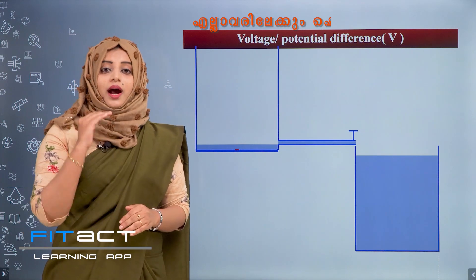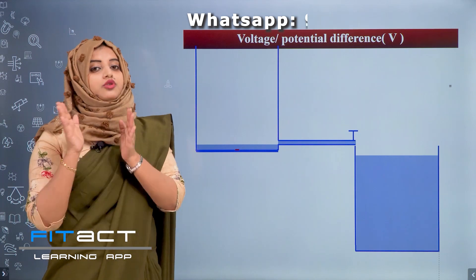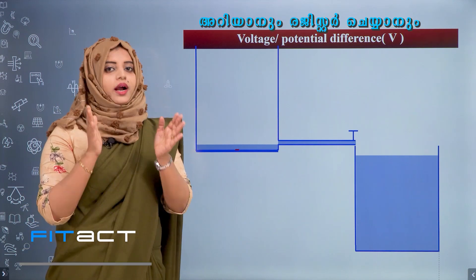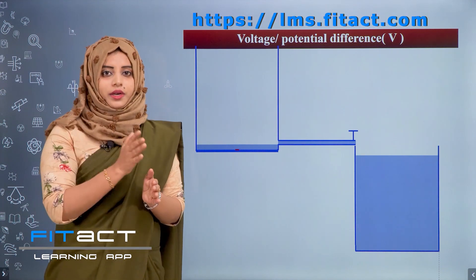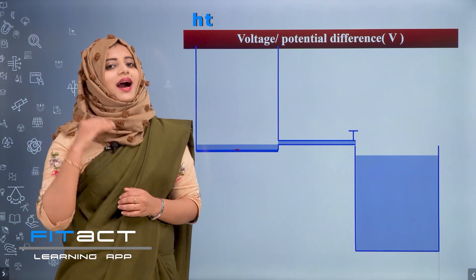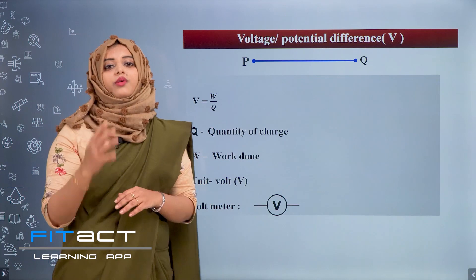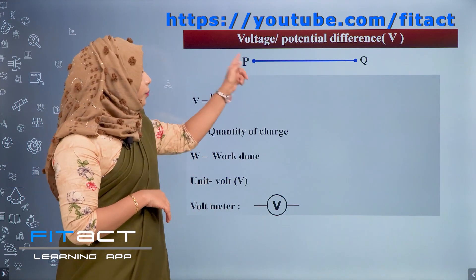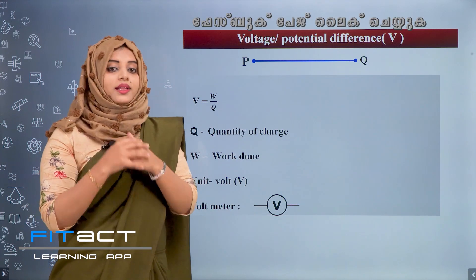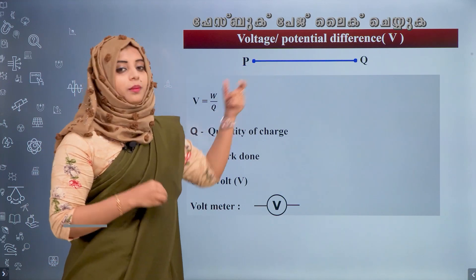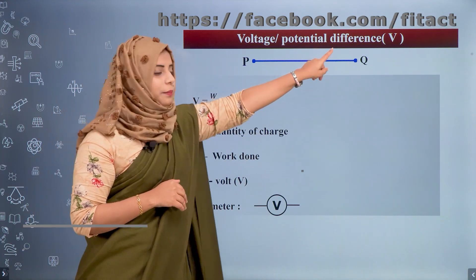Just like this, current flows through a conductor only when there is a potential difference between the two ends of the conductor. Current flows from high electrical potential to low electrical potential. The potential difference is the amount of work done to move one unit positive charge from one point to another.